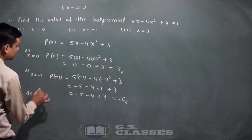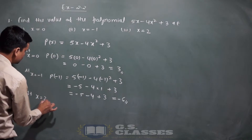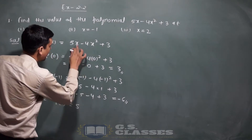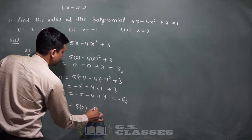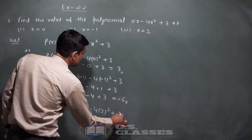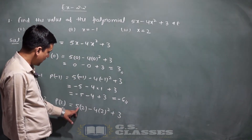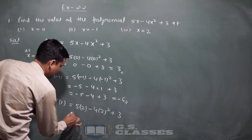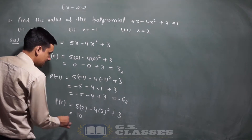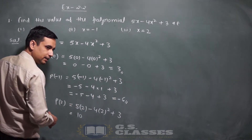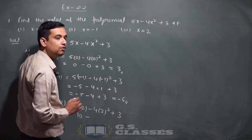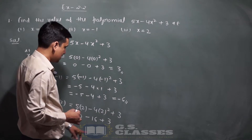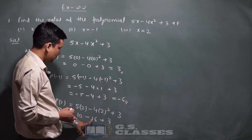एक और करके दिखाता हूँ — at x equals 2। x की जगह 2 रखेंगे: 5 into 2, minus 4 into 2 का square, plus 3। 5 into 2 = 10। 2 का square = 4, और 4 into 4 = 16। Plus 3 — तो 10 plus 3 = 13, और 13 minus 16 = minus 3।